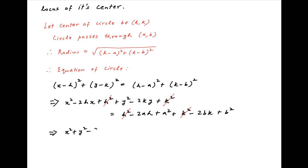And so the equation of the circle can be written as x squared plus y squared minus 2hx minus 2ky is equal to a squared plus b squared minus 2ah minus 2bk.